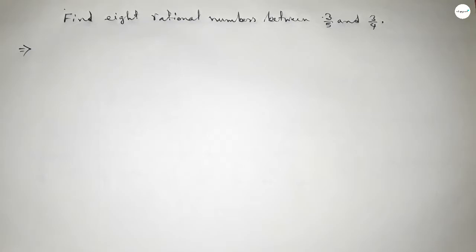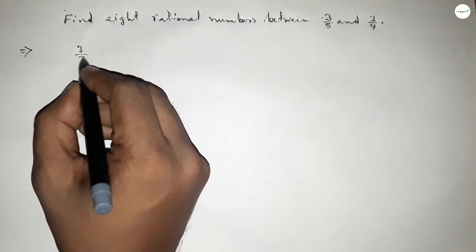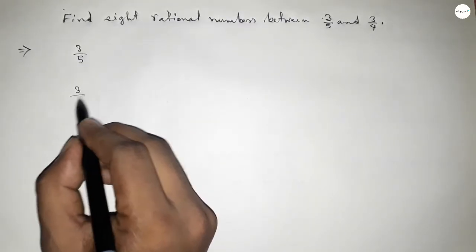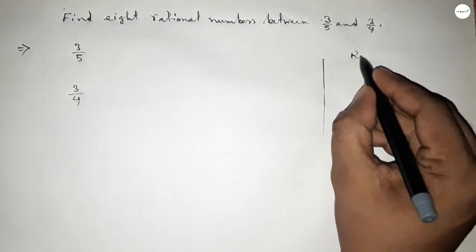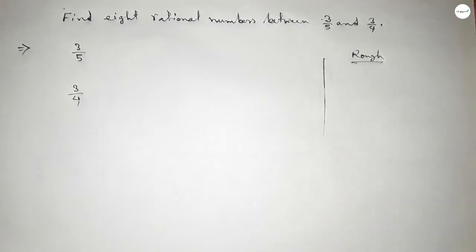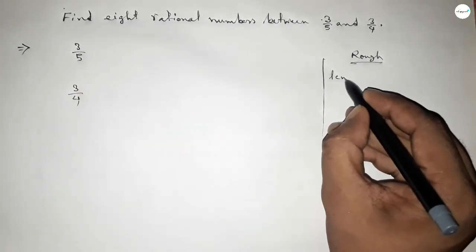So first write down here 3 over 5 and 3 over 4. Now roughly discussing some calculation here. The denominator of both are not equal, so first we have to find out the LCM of 4 and 5.